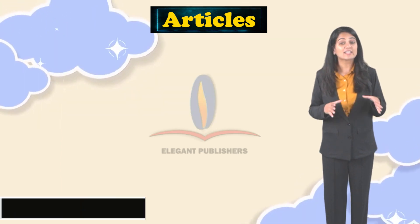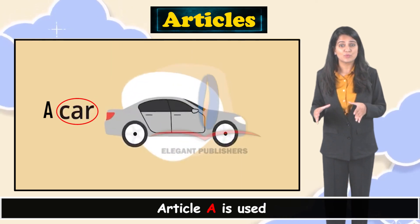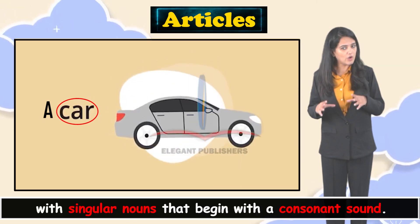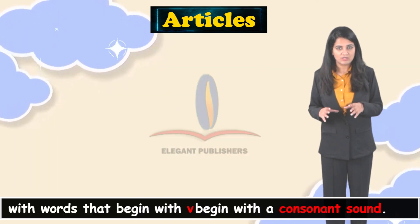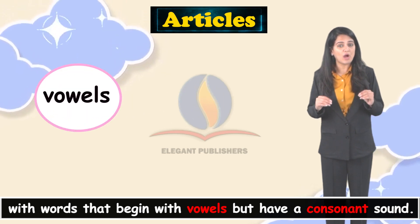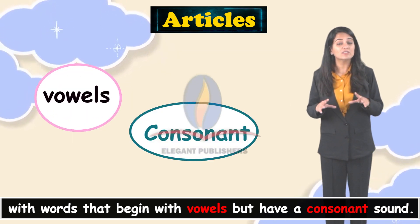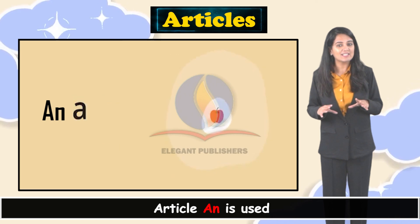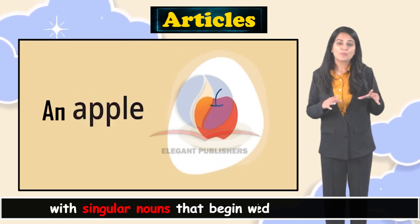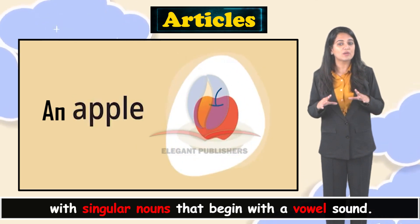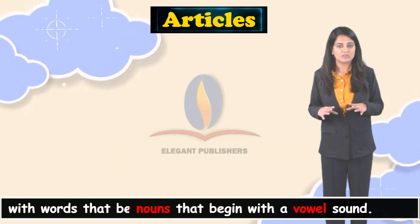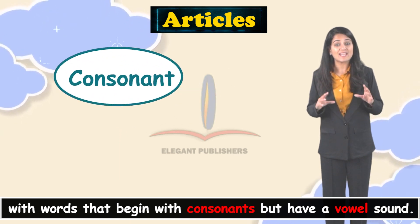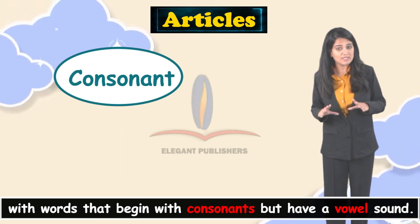You already know article 'a' is used with singular nouns that begin with a consonant sound, and with words that begin with vowels but have a consonant sound. Article 'an' is used with singular nouns that begin with a vowel sound, and with words that begin with consonants but have a vowel sound.